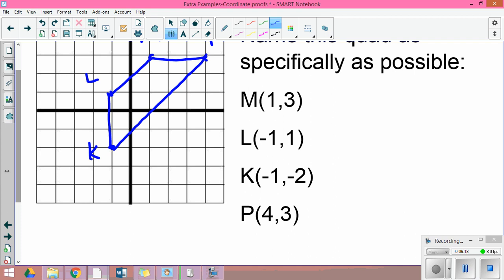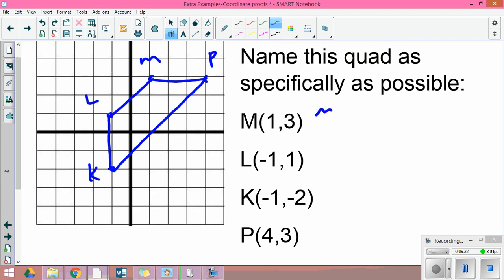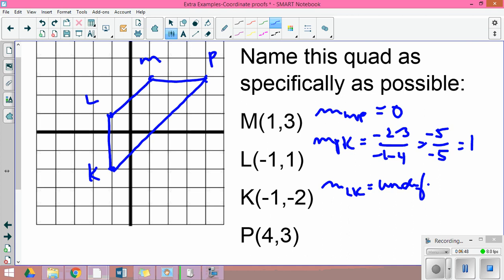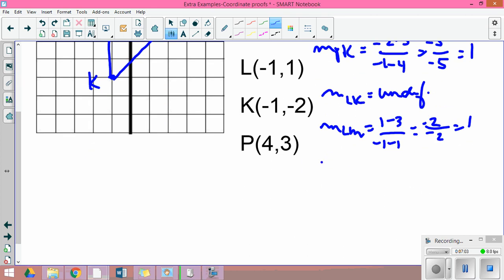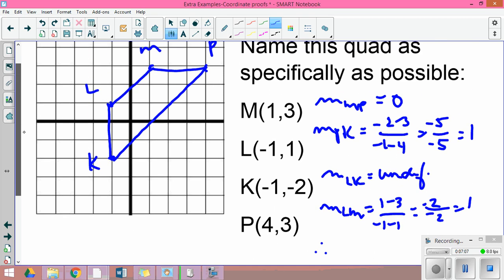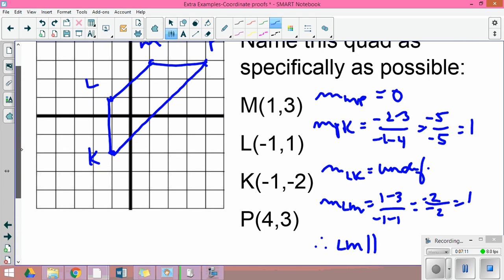If I go through and do my slopes: the slope of M to P is horizontal, zero. My slope from P to K is -2 minus 3 over -1 minus 4: -5 over -5, which is 1. My slope of LK is undefined because that is a vertical line. And my slope from L to M is 1 minus 3 over -1 minus 1, so -2 over -2, which is 1. At this point I can conclude therefore LM is parallel to KP.